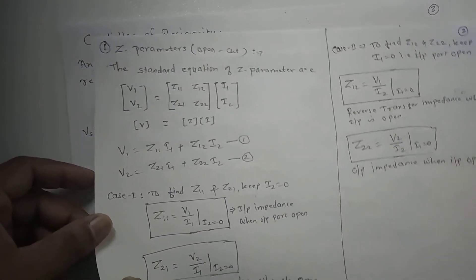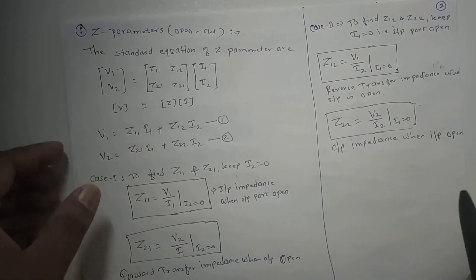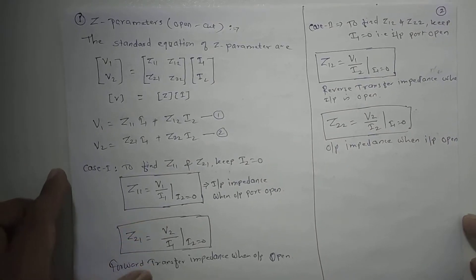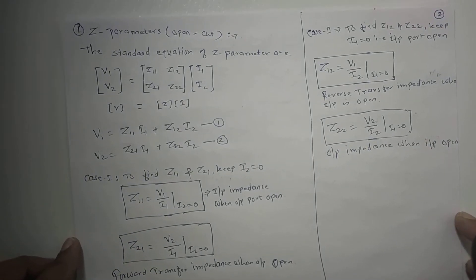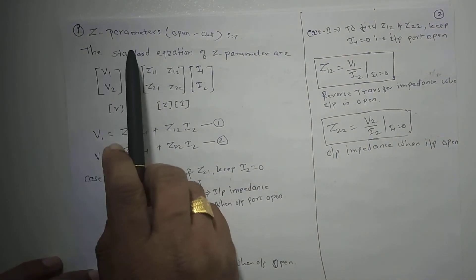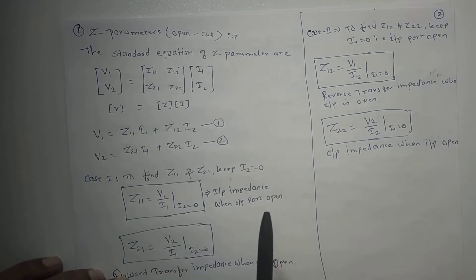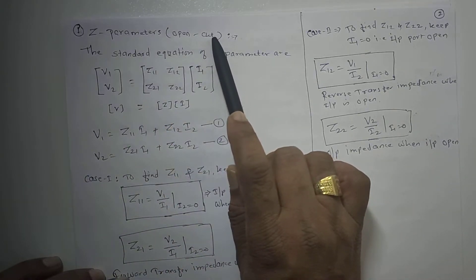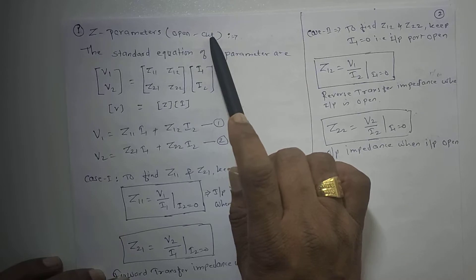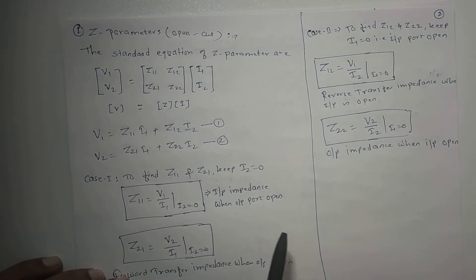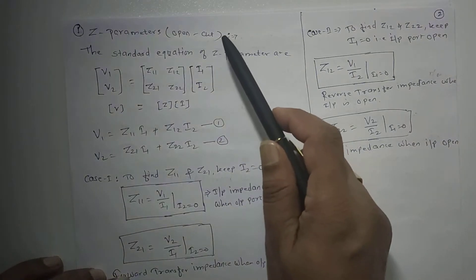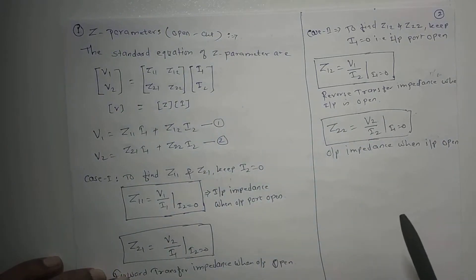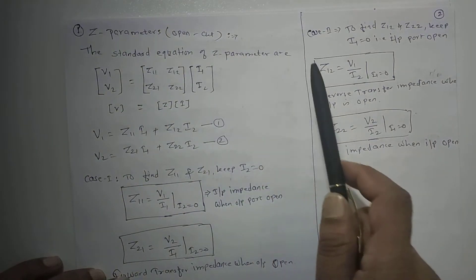Now let us see the Z parameters and how we define them. The Z parameters are also called open circuit parameters because to obtain these parameters we have to keep either the input port or output port open circuit. Hence it is called the open circuit parameter.